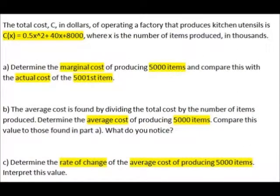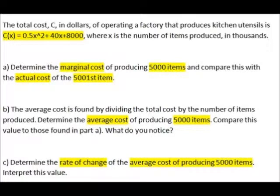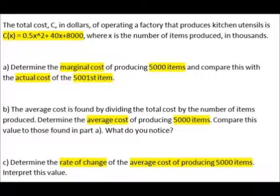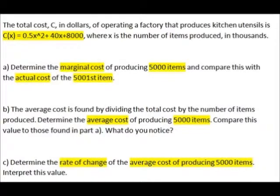This question comes from Unit 2: Exploring Derivatives. The cost function is C(x) equals 0.5x squared plus 40x plus 8,000, and this whole question revolves around this formula. In Part A you're determining marginal cost, which is just the derivative, compared with the actual cost of the 5,001st item. In Part B you find average cost — total cost over total items produced. In Part C you find the derivative of the average cost function from Part B.